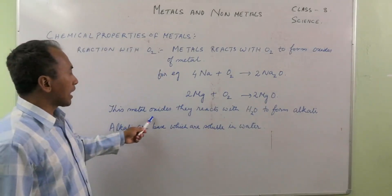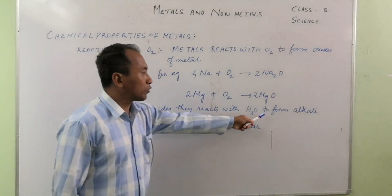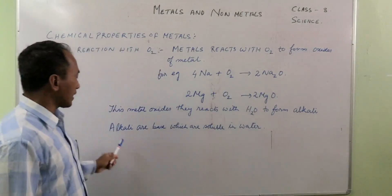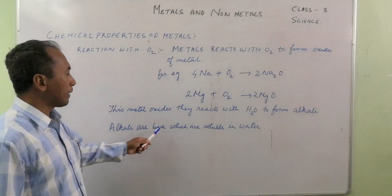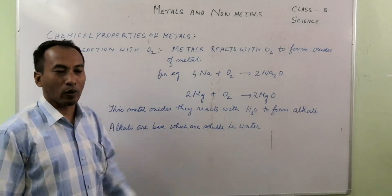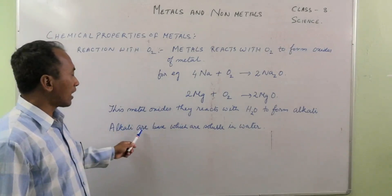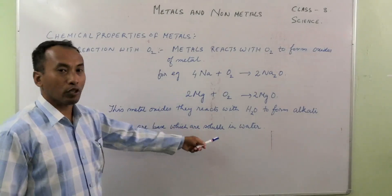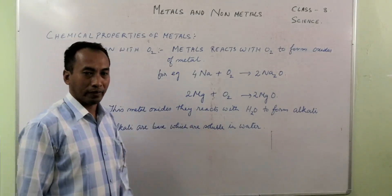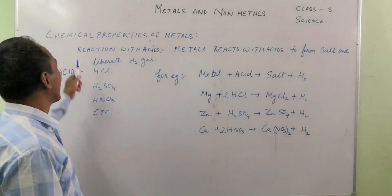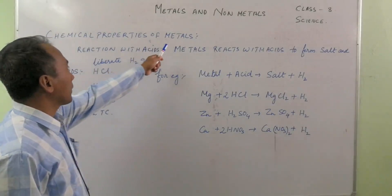These metal oxides react with water to form alkali. Alkali are bases which are soluble in water. That is the second property of chemical properties of metals.